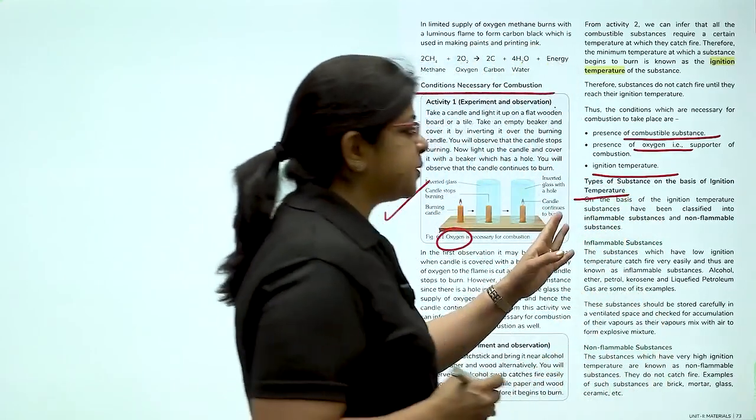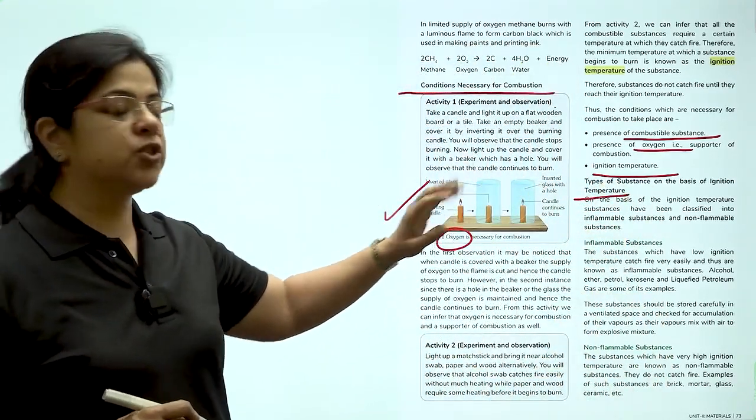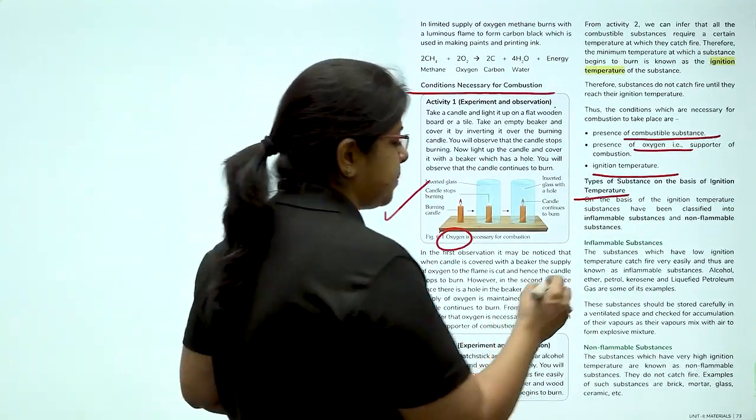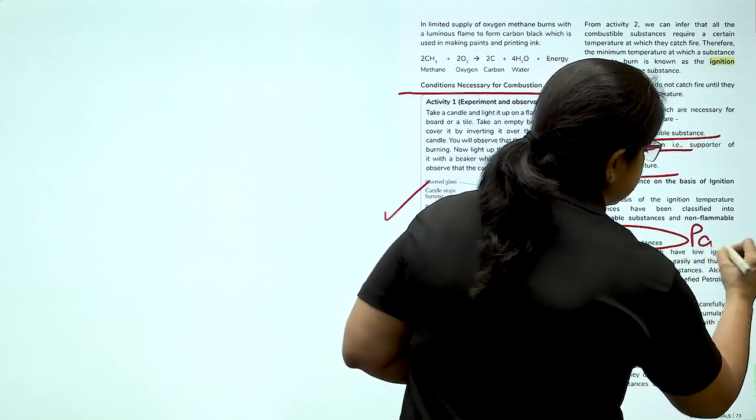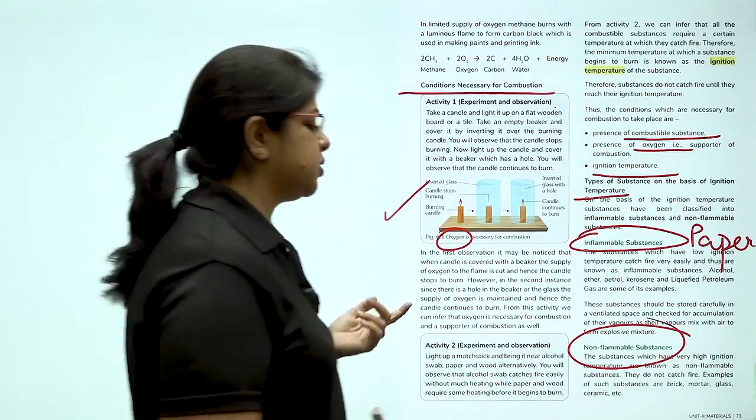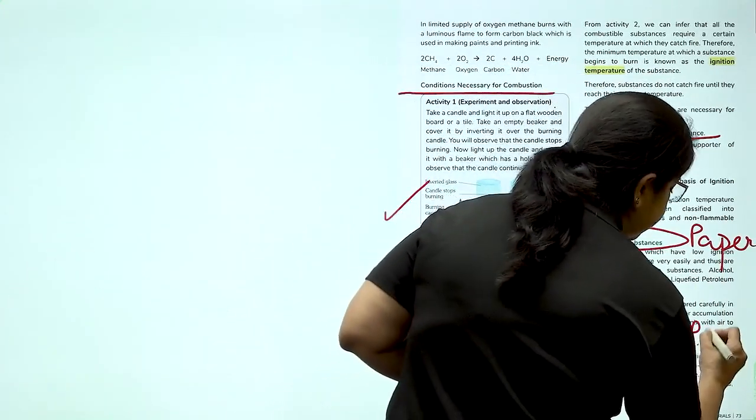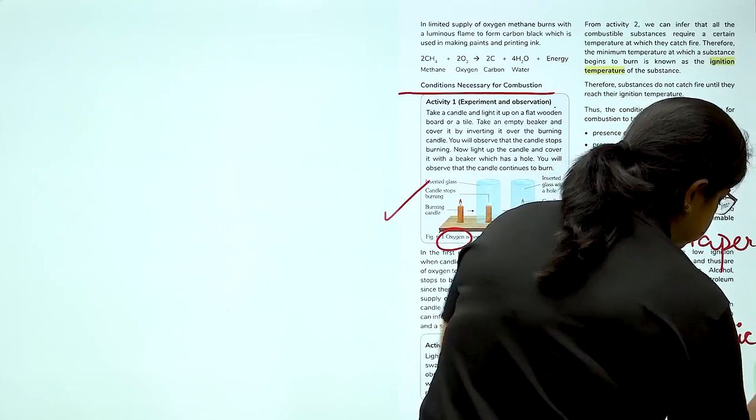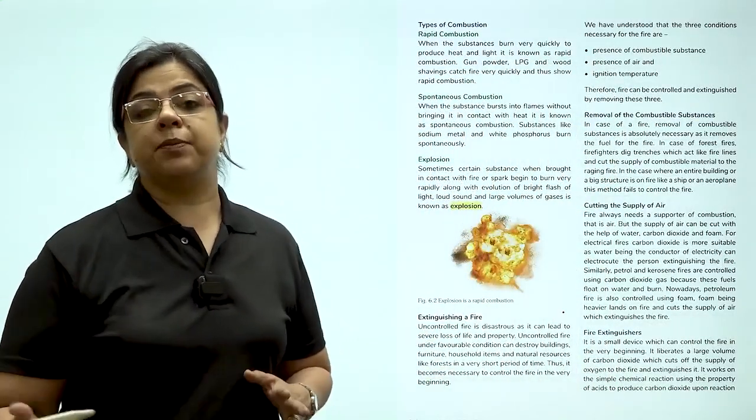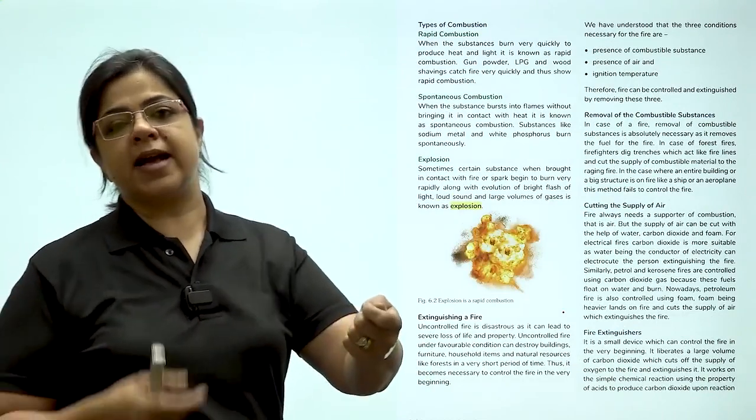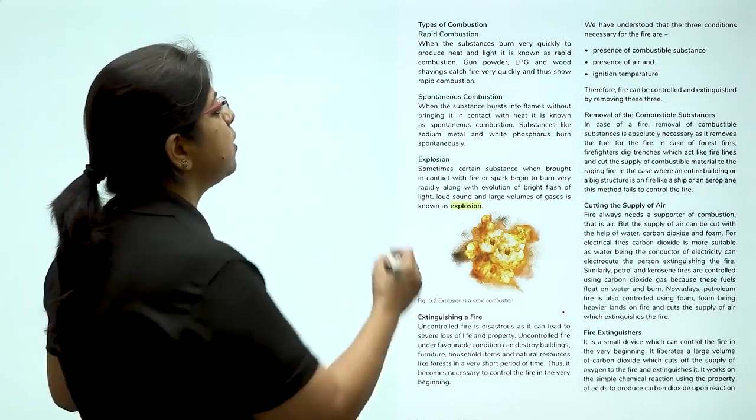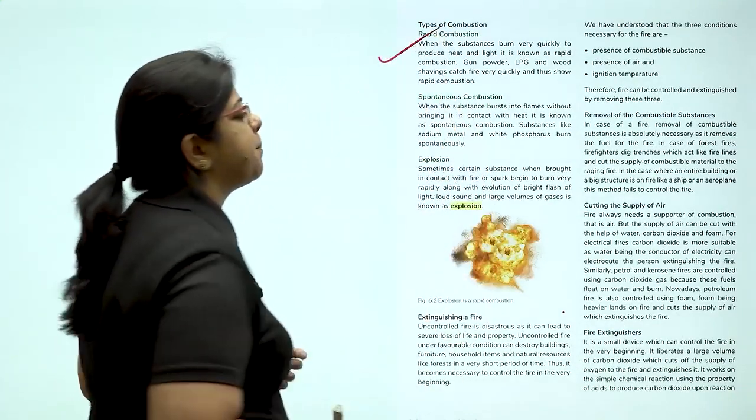There are two types of substances based on ignition temperature. So those who will have a very low temperature will be inflammable substances like paper. And those which have a very high ignition temperature will be non-inflammable substances like plastic. Then children, let us talk about the type of combustion. So the moment you switch on the gas and you bring a lighter to it, it immediately lights up. What is it called? It is known as rapid combustion.